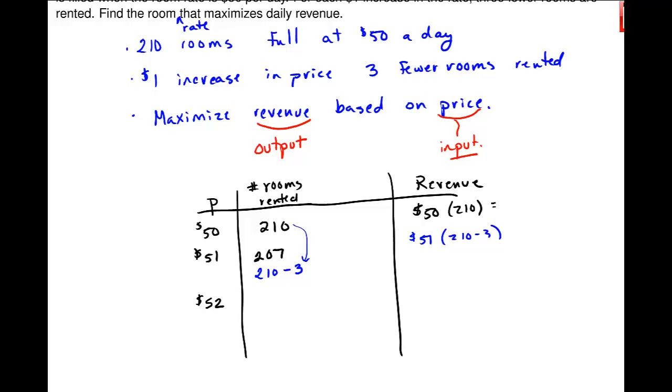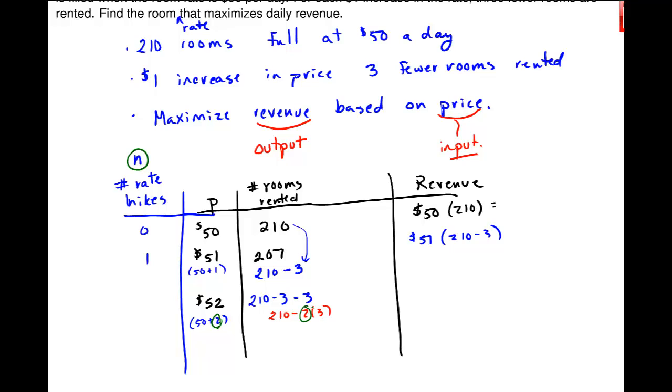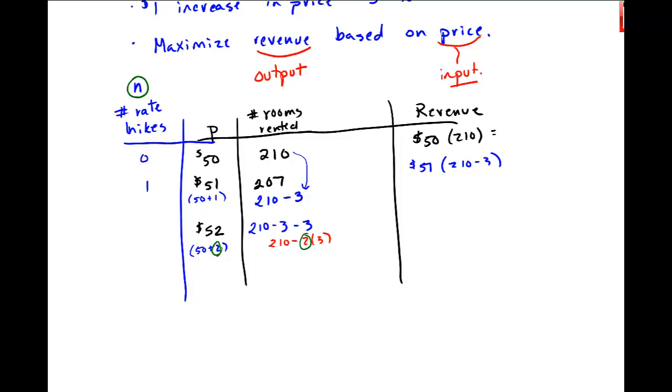Now, I think if I could figure out a pattern for this column stuff, then I could figure out the revenue. If it's 52, the next pattern is this is 210, and I have to subtract 3 twice. So there is some kind of maybe additional thing like number of rate hikes that's coming into play that might help us see this. But when I raise the rate by $1, I get p is 51. That's 50 plus this rate hike. So maybe I'll do this as n. That's 50 plus 1 or 50 plus n. Here is 50 plus 2. Do you see this pattern? Just based on a table, just based on writing. So let me do another one.